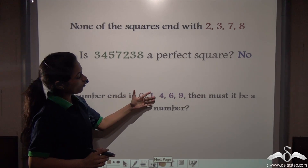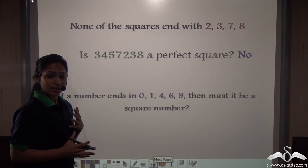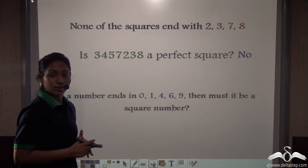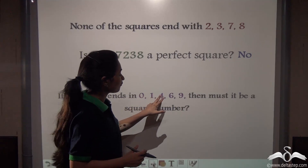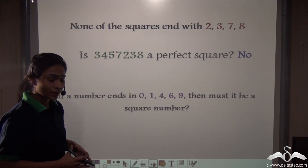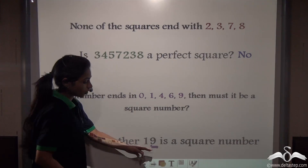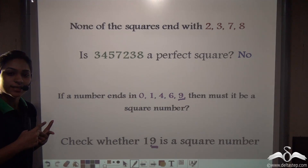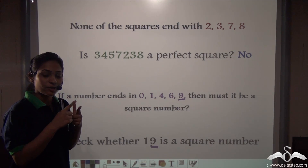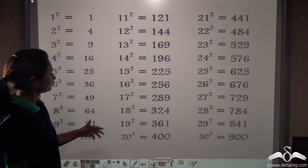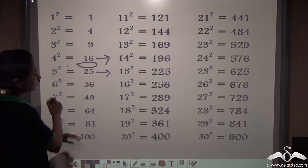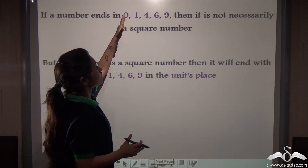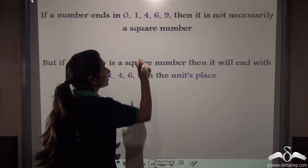If a number ends in 0, 1, 4, 6, or 9, then must it be a square number? I said that if a number is a perfect square, it will have any of these digits in its unit digit. But if any number ends with 0, 1, 4, 6, or 9, then is it compulsorily a square number? Check for 19 — 19 has the last digit as 9. So this should be a square number. But 4² = 16 and 5² = 25, so there is no natural number between 4 and 5. So how can 19 be a square number? 19 is not a perfect square. So if a number ends in 0, 1, 4, 6, or 9, just like 19, then it is not necessarily a square number.